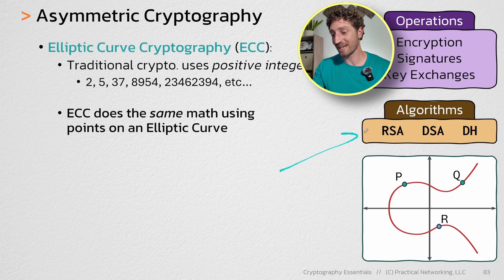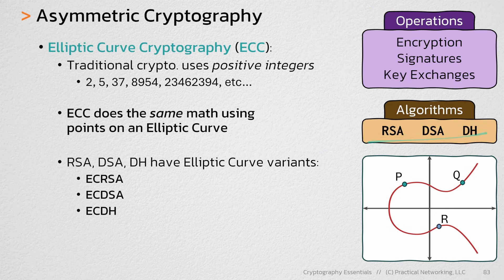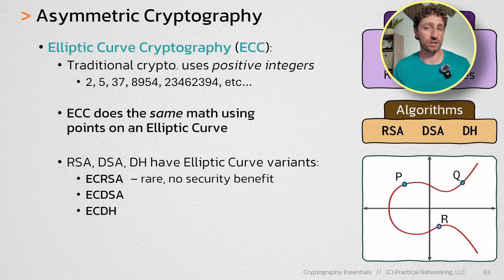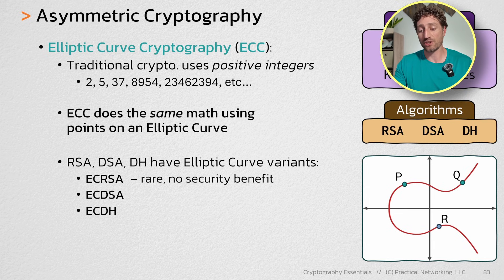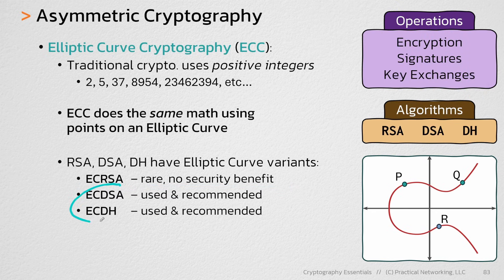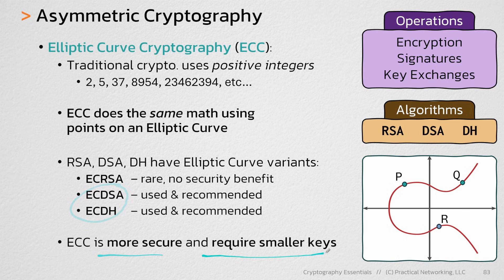Which means each of these algorithms that we've been discussing this entire time also have an elliptic curve variant, each simply doing their respective algorithm on a curve. Now, in the case of ECRSA, it turns out that doing RSA on an elliptic curve is not any more secure than just doing RSA naturally. So you don't actually see ECRSA used in practice in the modern world. Both ECDSA and ECDH, however, are both more secure and require smaller keys than their non-elliptic curve variants.